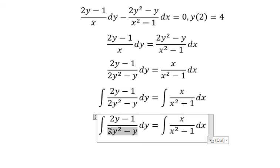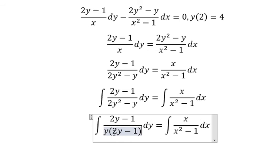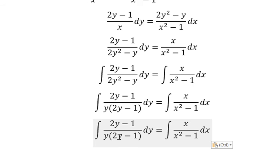About this one we can do about factorization. So 2y minus 1, 2y minus 1, they simplify.